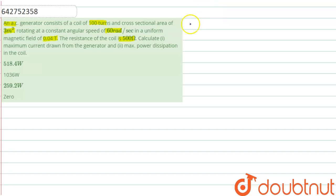Friends, first of all we write the given values: N is 100 turns, area is 3 meter square, omega is 60 radian per second, and magnetic field B is 0.04 tesla.